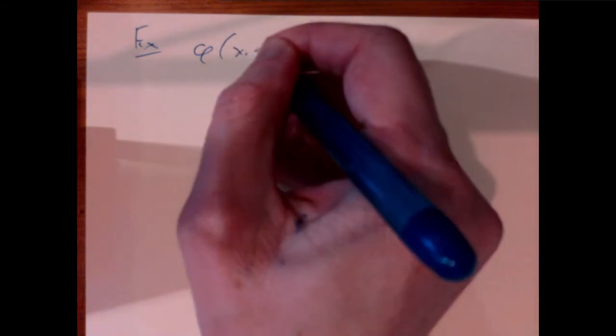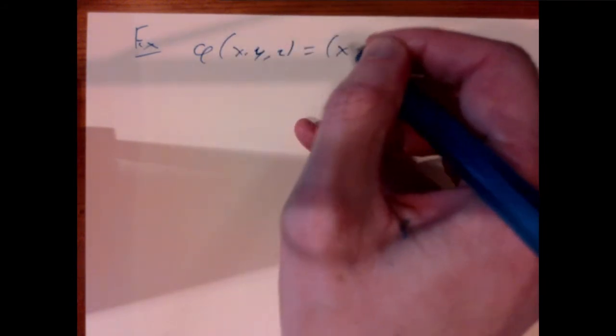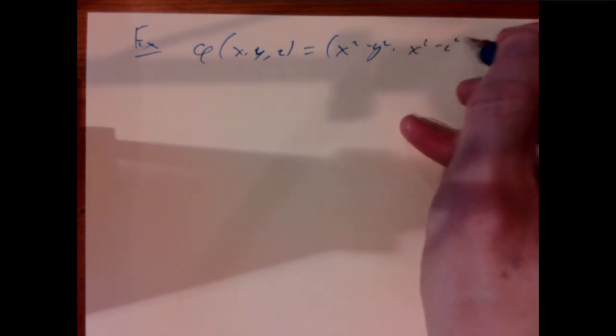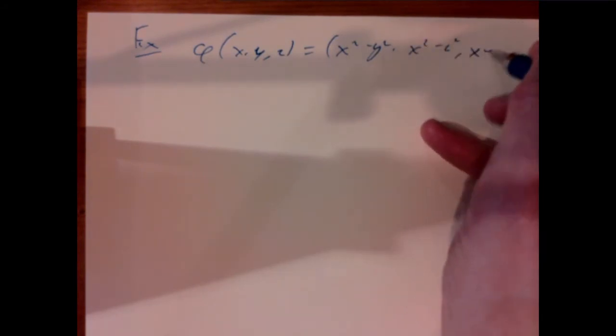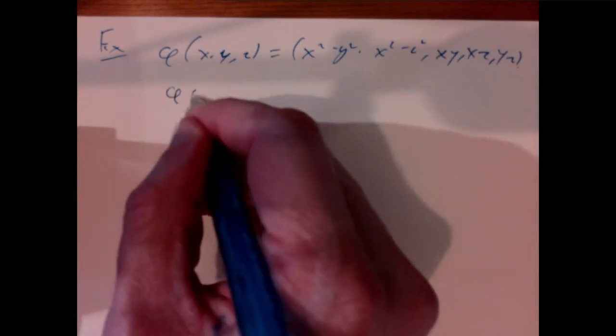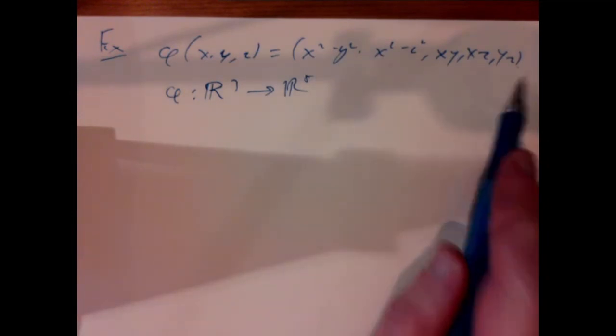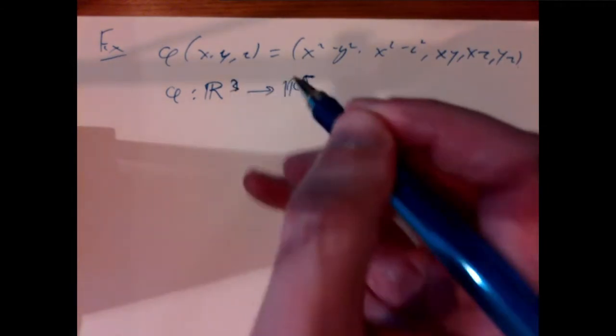As a simple example, consider the map φ(x, y, z) = (x²−y², x²−z², xy, xz, yz) from ℝ³ to ℝ⁵. Its derivative drops rank at the origin, but it is an immersion on ℝ³ minus the origin.